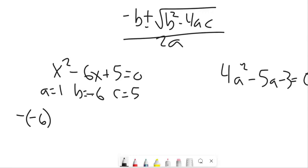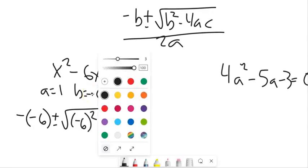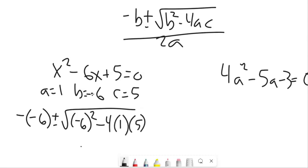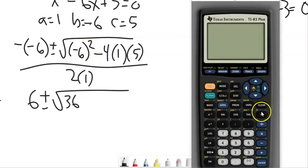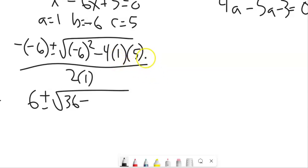So negative B. So notice I have a negative, negative 6. I'm just going to write it out, and then I'll deal with it. So negative, negative 6 plus or minus the square root of B squared. B is negative 6. So negative 6 squared minus 4 times A times C all over 2 times A. Negative negative 6 is 6. Square root of, negative 6 squared is 36. If you're doing it on your calculator, be super careful. If you go negative 6 squared, you're not going to get the right answer. It's negative 6 squared minus 4 times 1 times 5 is 20, all over 2. That whole thing is over 2.